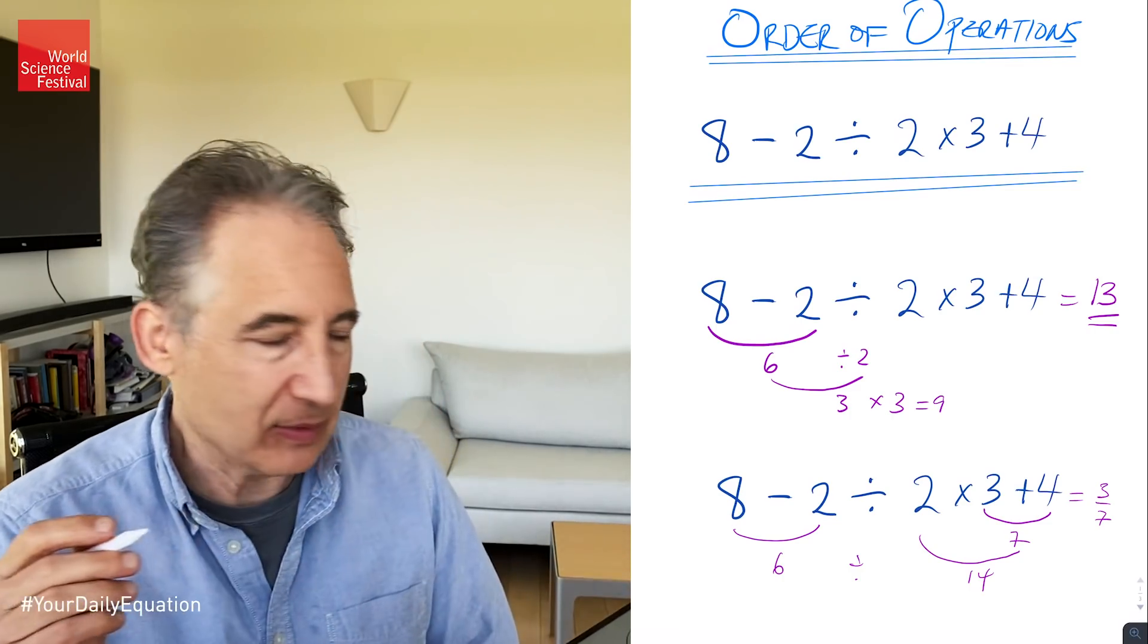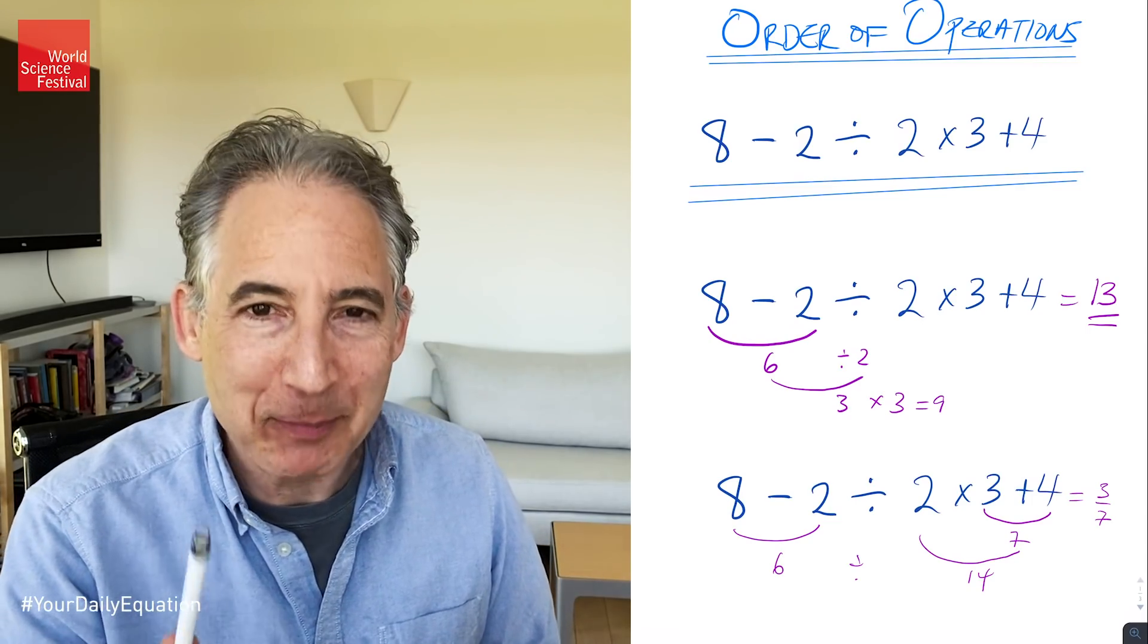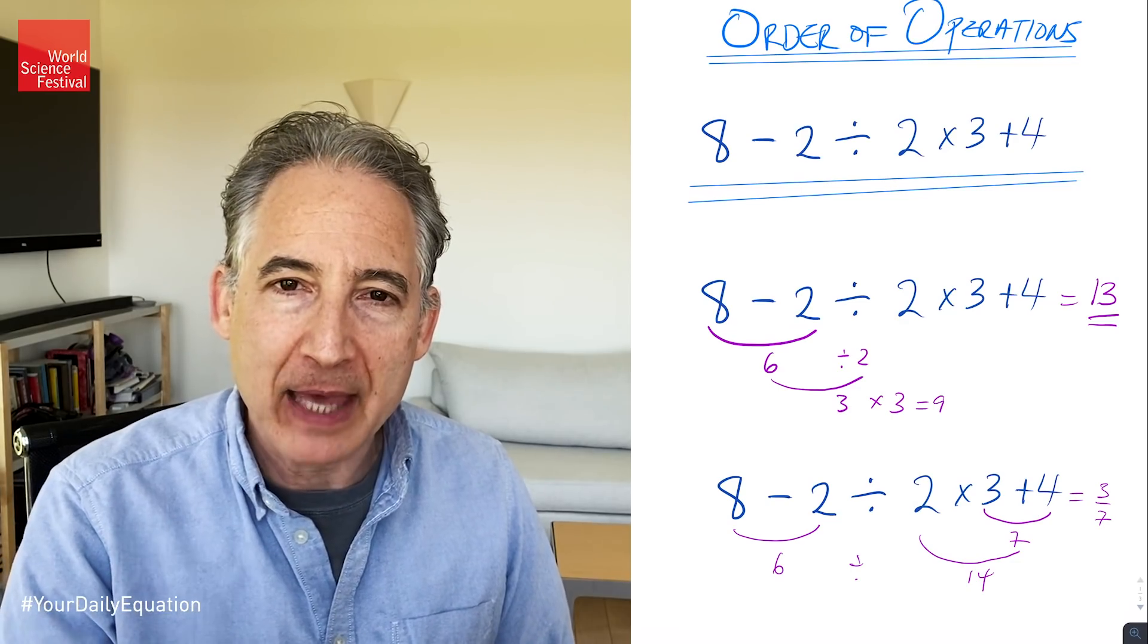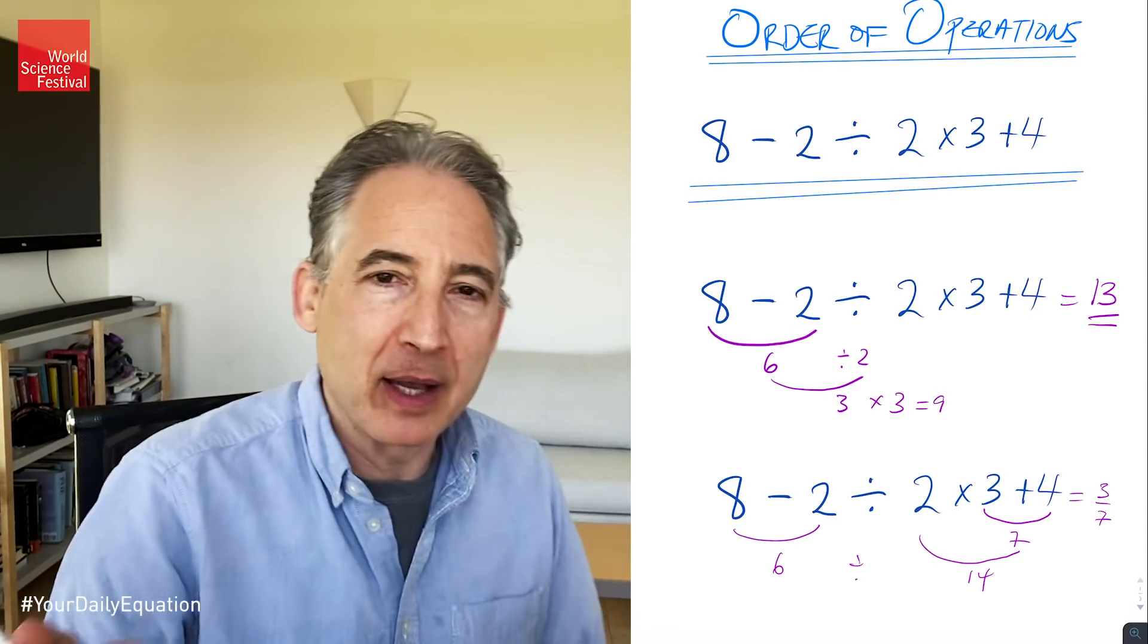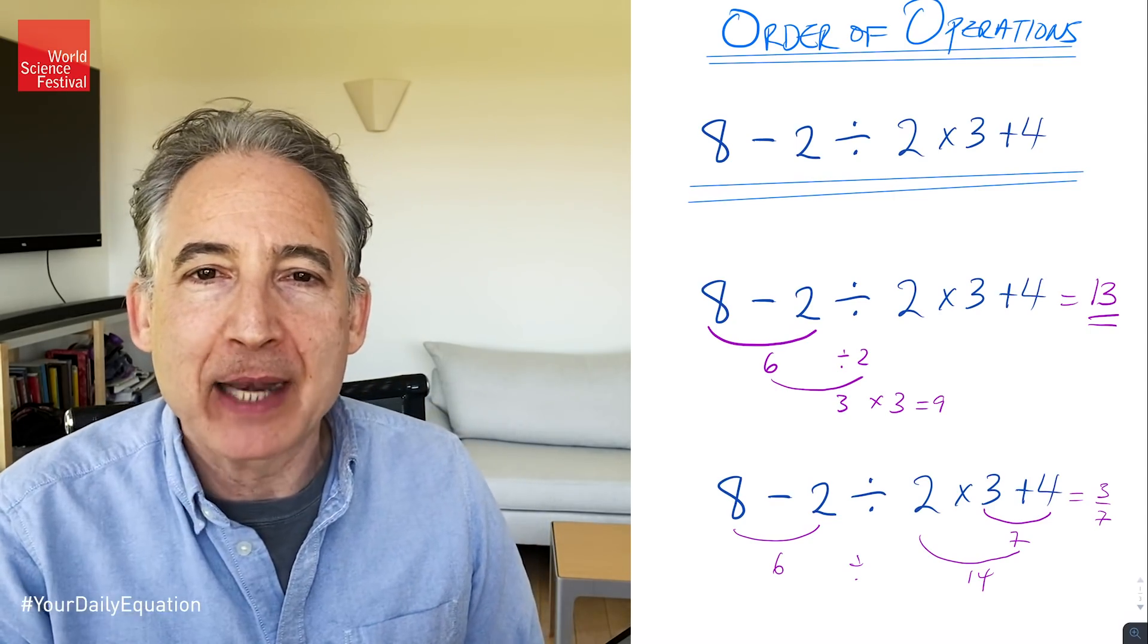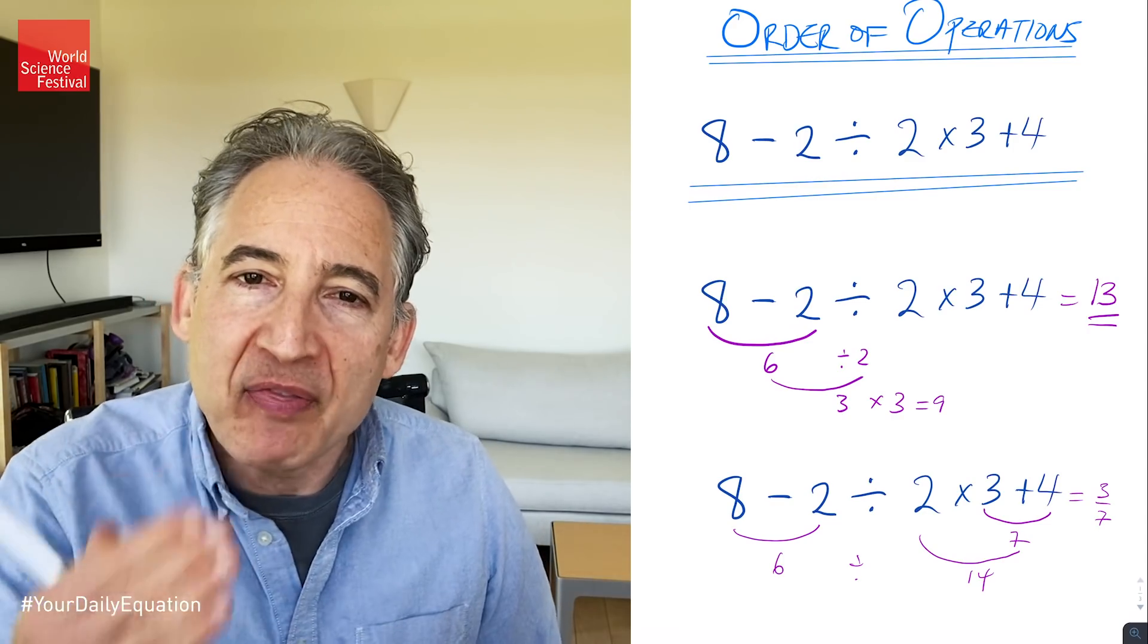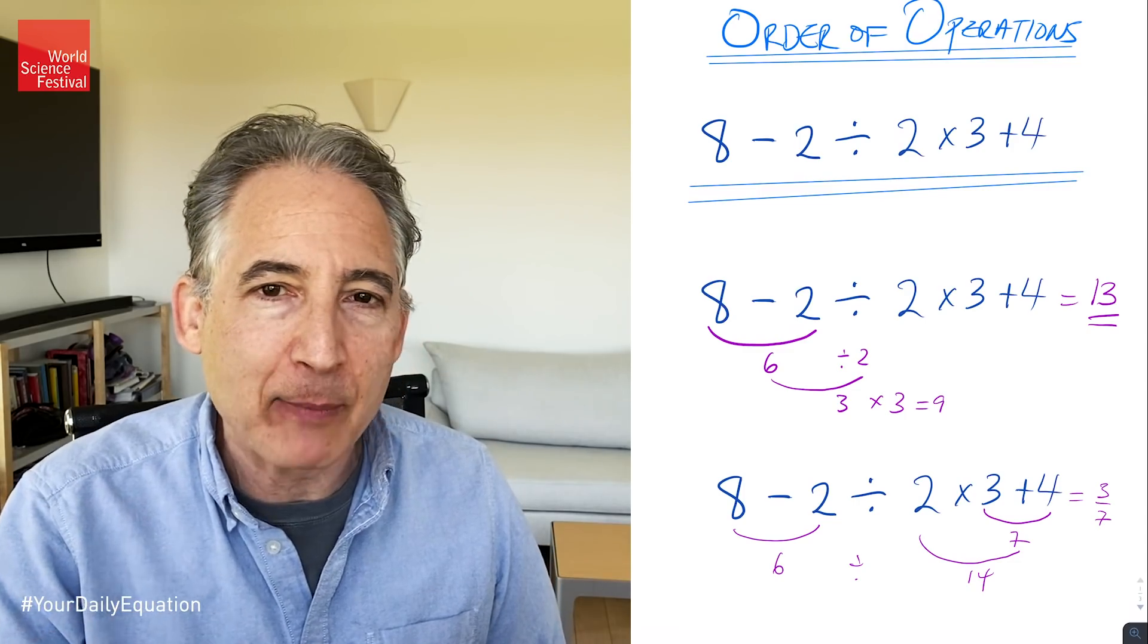If I had a graduate student come into my office and write down the left-hand side of this, I would say to that student, don't talk to me that way. Get out of my office. Right? I probably wouldn't be that mean about it. But I'd say, we physicists don't speak to each other this way. We don't speak in ambiguous mathematical sentences. We talk in precise mathematical sentences, and we don't rely upon some arbitrary acronym, PEMDAS, in order to make sense of the mathematical sentences we write down. Instead, I would say to that graduate student, are you kidding me? Where are your parentheses?